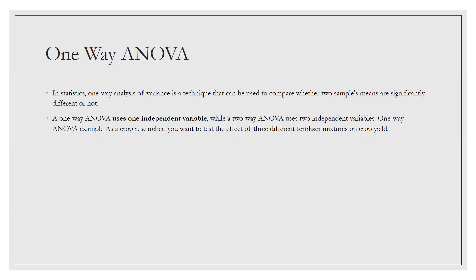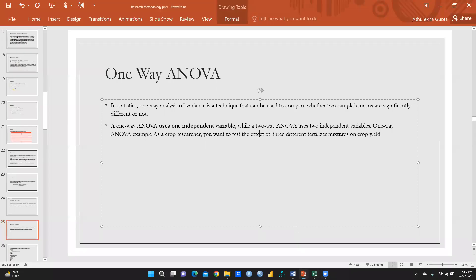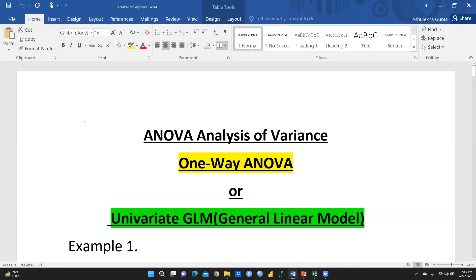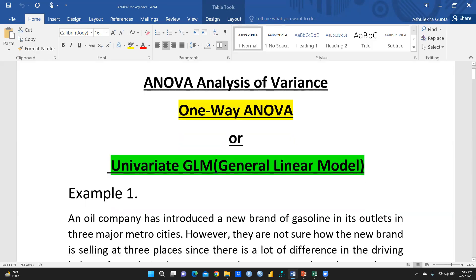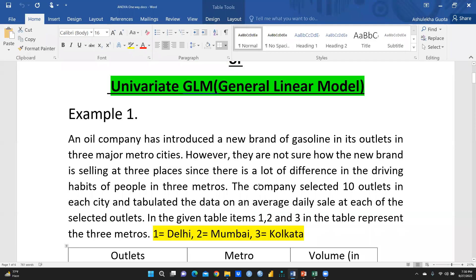For example, if we have three different fertilizer mixtures, we want to check whether there is any difference among all three on crop yield — so we apply ANOVA, which stands for Analysis of Variance. Here I will discuss one-way ANOVA only; two-way ANOVA we will discuss later.